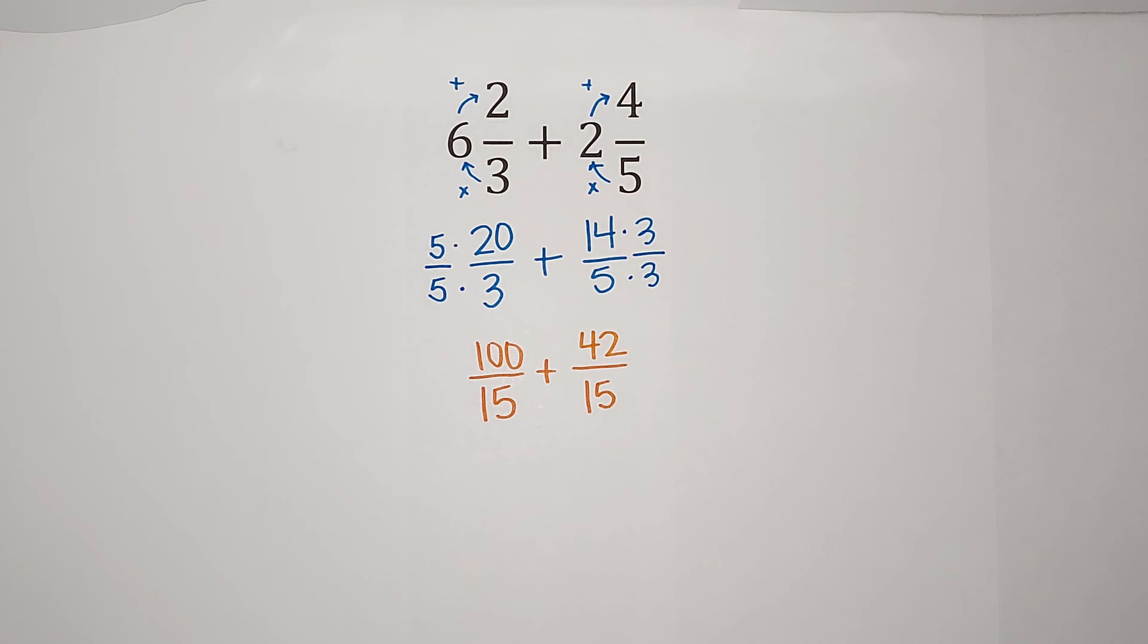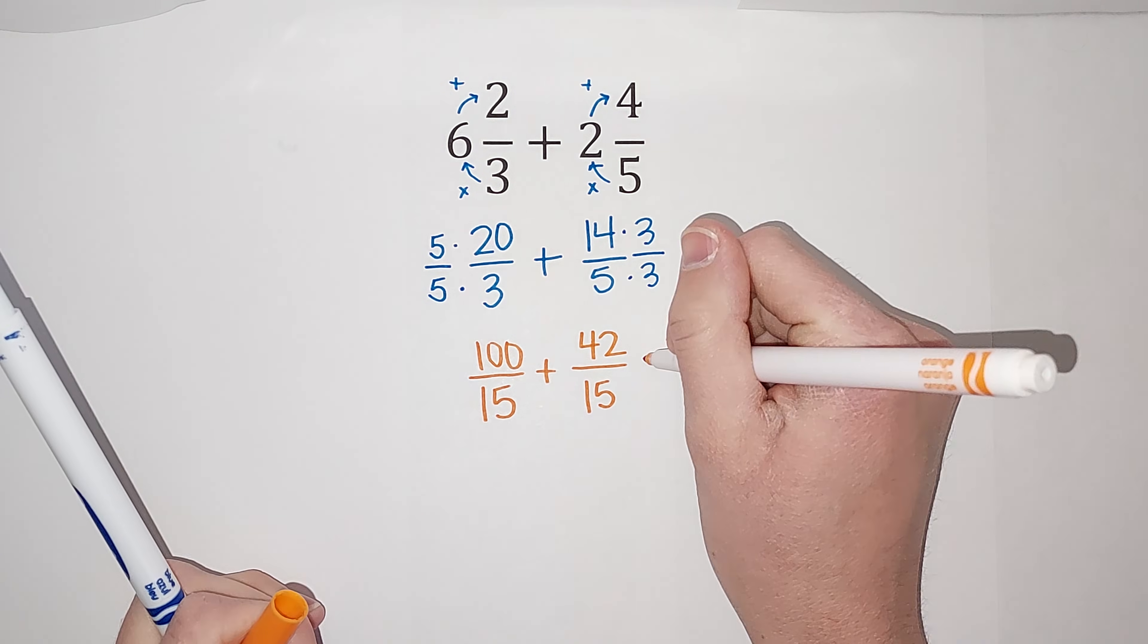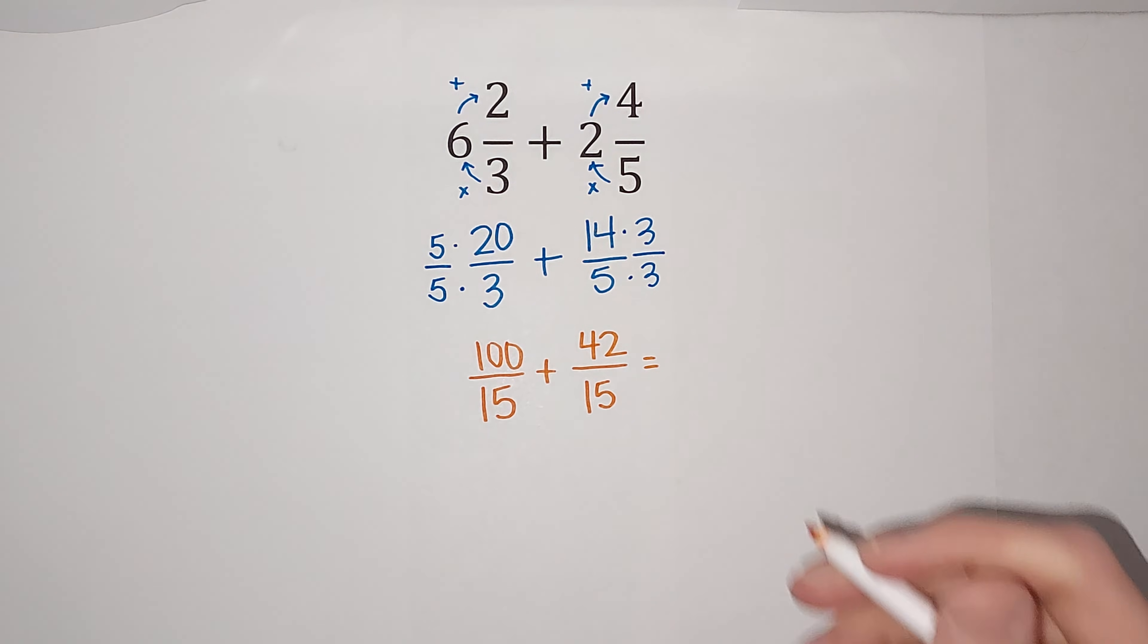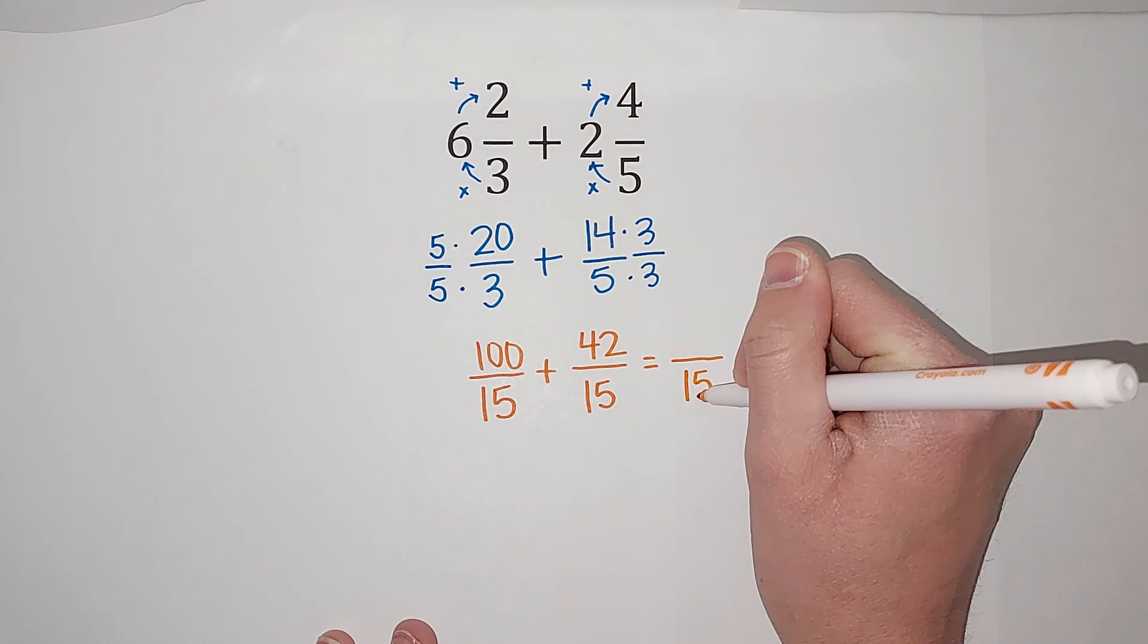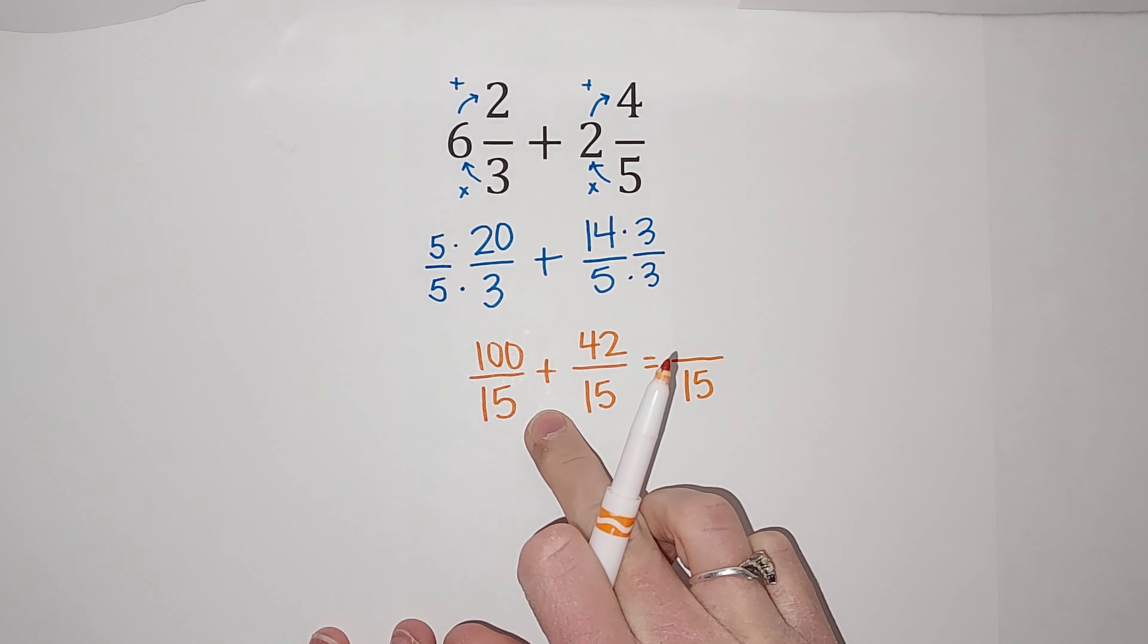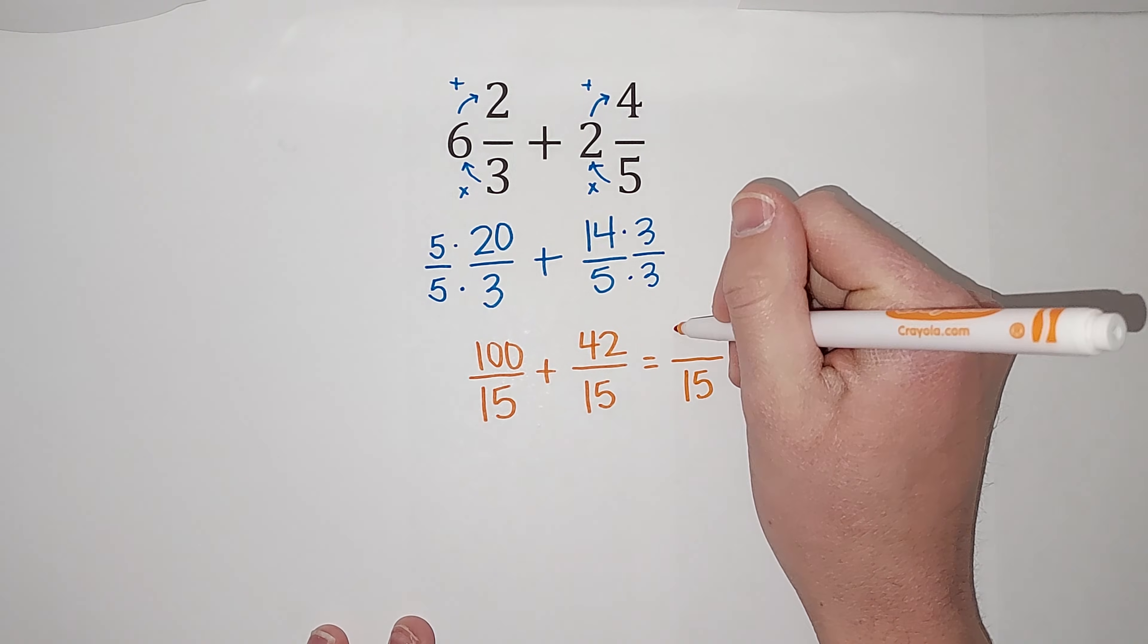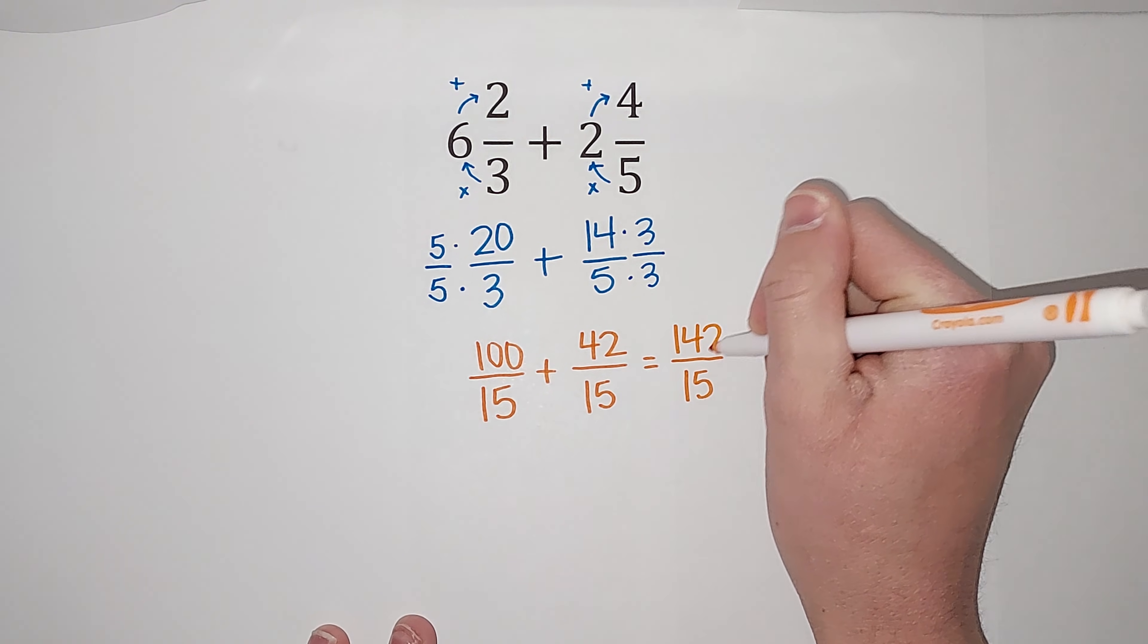All right, now our denominators are the same and I can add these. So when I add these, the denominator stays 15. That's why they needed to be the same. And then I do 100 plus 42, which gives me 142.